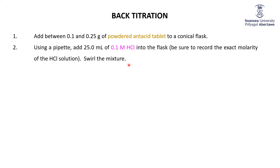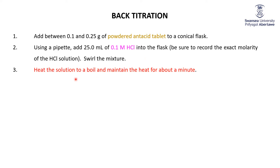We then swirl that around. Remember, this amount of HCl is much more than we need to neutralize all of the base in the antacid — it's in excess. We then heat the solution to a boil and maintain the heat for about a minute. This step is highlighted in red because there's a post-lab question associated with it.